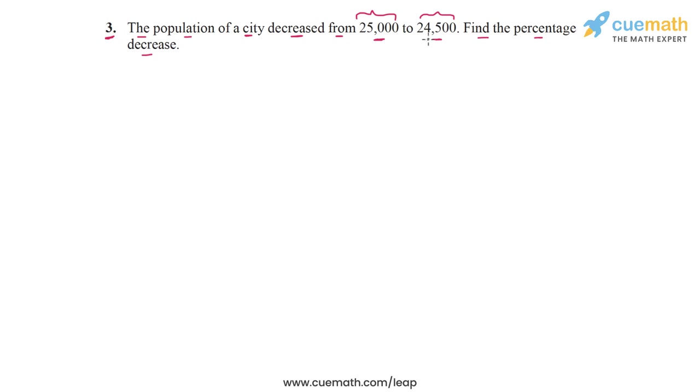To do this, we first calculate the absolute value of the decrease in population and then we determine that this decrease is what percentage of the original population. Let's do this step by step.